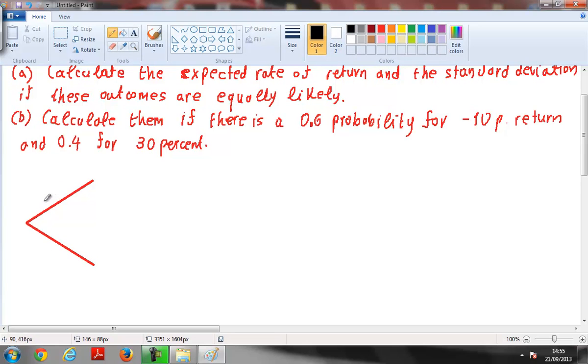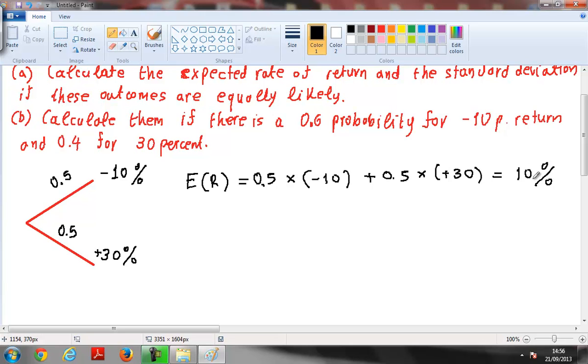And we have either minus 10% with probability 0.5 or plus 30% with probability 0.5. We want to calculate the expected rate of return. So the expected rate of return is the probability 0.5 multiplied by the corresponding rate of return plus the other probability multiplied by the corresponding rate of return. If we multiply these two numbers we get 10% and that is the expected rate of return in this case.